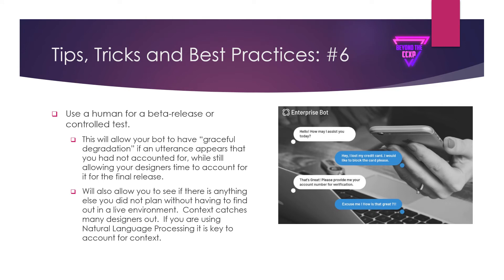Number six: use a human for a beta release or controlled test. This allows your bot to have graceful degradation if an utterance appears that you haven't accounted for, while giving designers time to account for it in the final release — they'll see transcripts and where the human took over. Also, context catches many designers out. For example, if someone says 'I lost my credit card, I'd like to block the card please,' and the bot responds 'That's great!' — it's not accounting for the context of what's being discussed, causing a very bad customer experience.